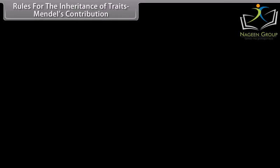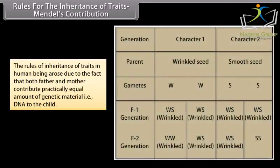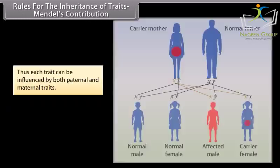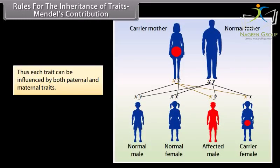Rules for the inheritance of traits — Mendel's contribution: the rules of inheritance of traits in human beings arose due to the fact that both father and mother contribute practically equal amounts of genetic material, that is DNA, to the child. Thus, each trait can be influenced by both paternal and maternal traits.